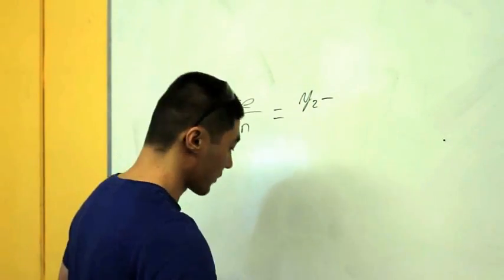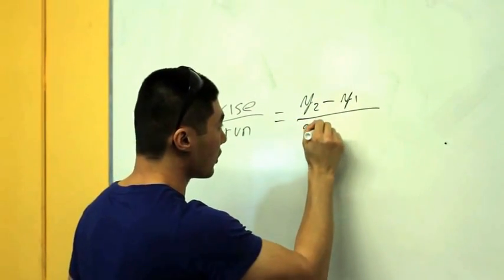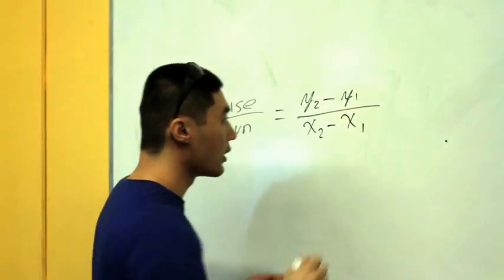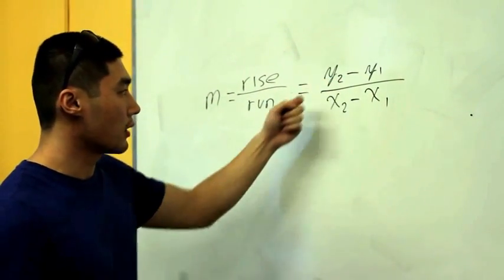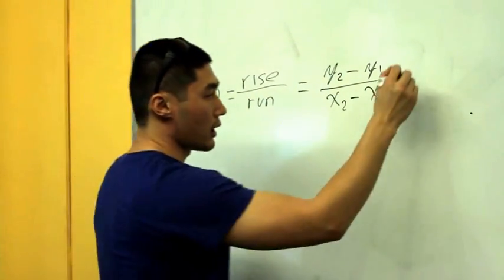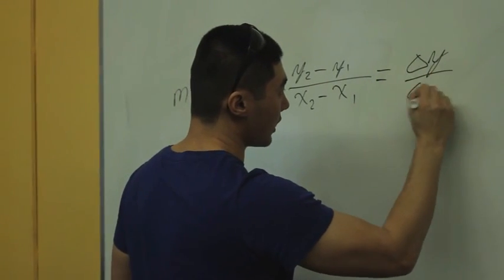Let me clean that up for you. It's (y2 minus y1) over (x2 minus x1). Notice that it's merely the difference between the y's and the x's, and can be shorthand written as delta y over delta x.